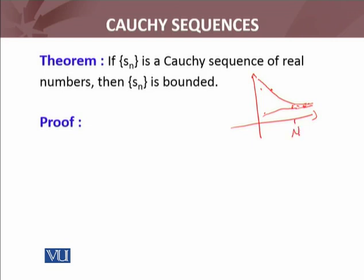Here you have capital N, and M and N greater than or equal to capital N, then |Sn - Sm| should be less than epsilon for all epsilon greater than zero. This means that initially the sequence terms can be anything, but after N we can make them as narrow as we want, the difference of these terms.